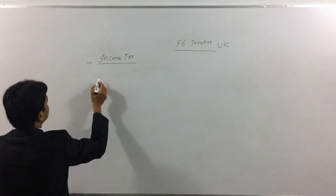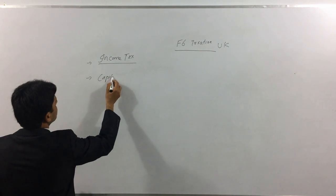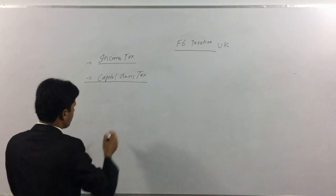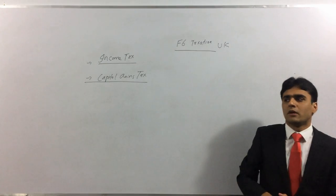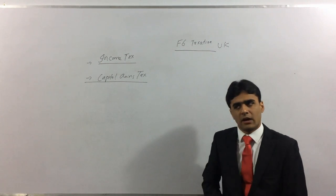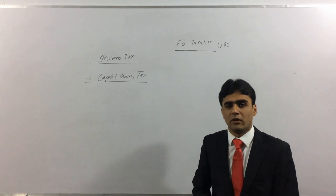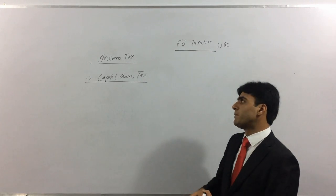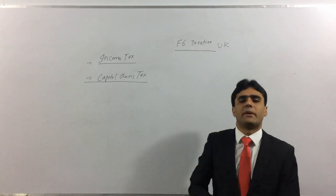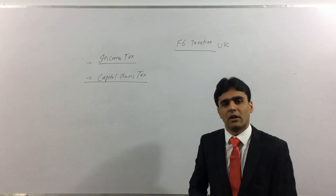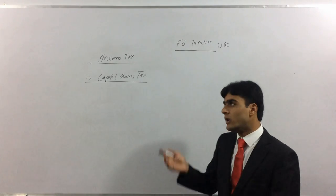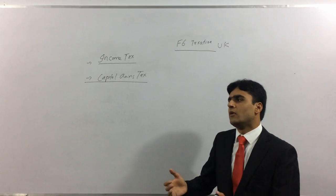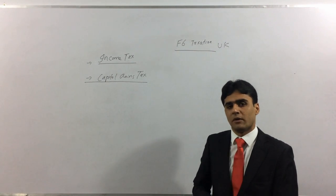The second major topic is capital gains tax. Capital gains tax is a tax charged when you sell an asset and make a gain on it. For example, if you bought a house for £50,000 and sold it for £100,000, you made a gain of £50,000, and you must pay tax on that — that is capital gains tax. Some assets may be exempt, others chargeable, and we will cover that in detail in the relevant topic.